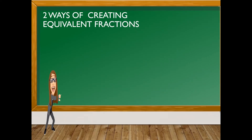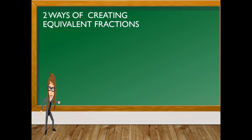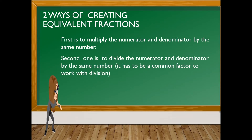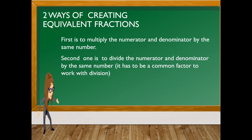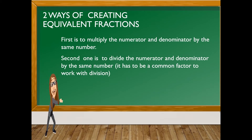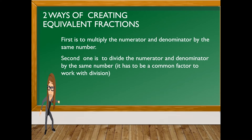There are two ways of creating equivalent fractions. First is to multiply the numerator and denominator by the same number. Second is to divide the numerator and denominator by the same number — it has to be a common factor to work with division.